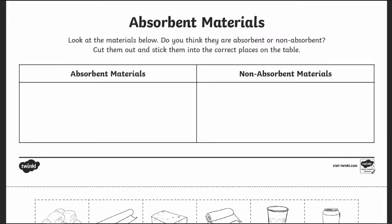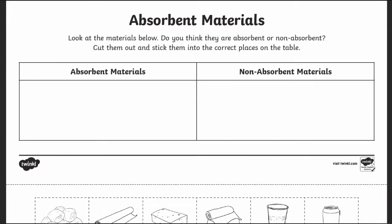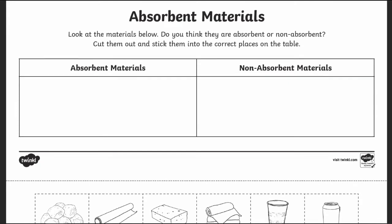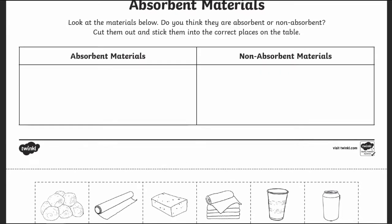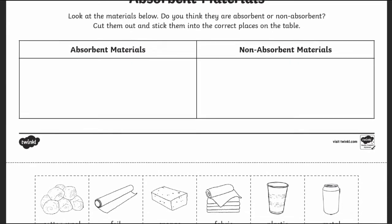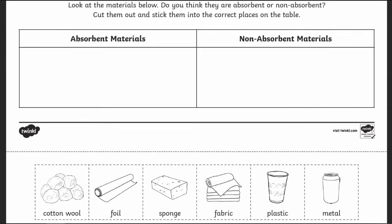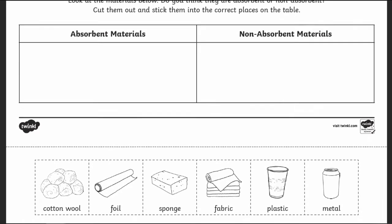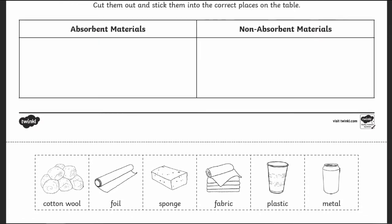For example, you can try this absorbent material sorting worksheet where learners can cut out the objects and guess whether each one is absorbent or not. If you like, you can follow this up with a practical activity where you test each one to see if they got it right.